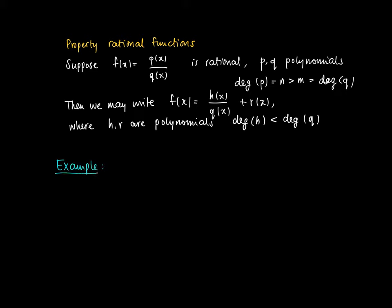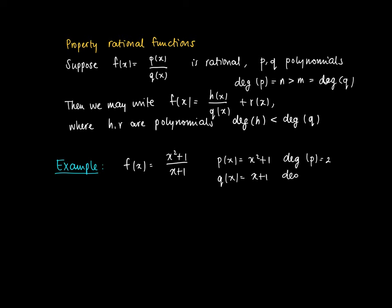For example, take the rational function f of x equals x squared plus 1 divided by x plus 1. So in this case we have two polynomials: p of x equals x squared plus 1, which has degree 2, and q of x which is just a simple linear function and its degree equals 1.